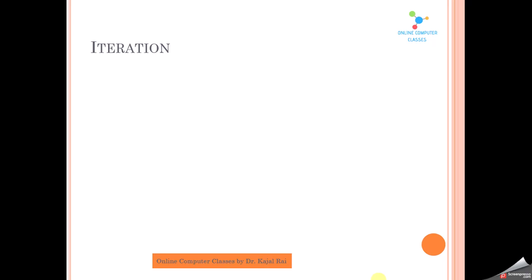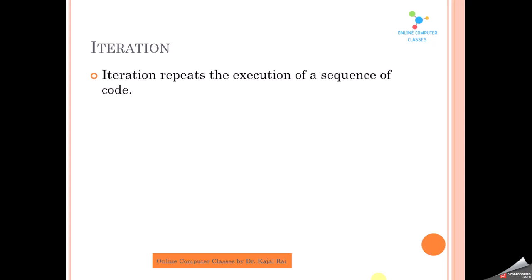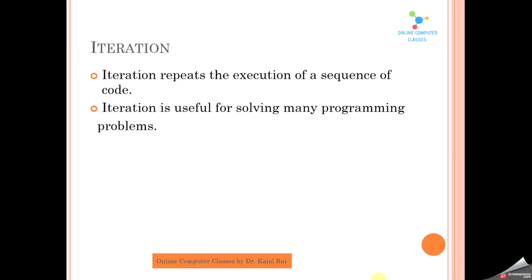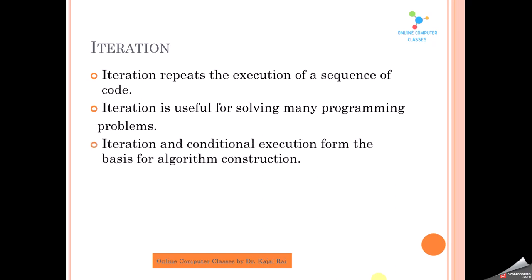First of all, we have to know what is iteration. Iteration is the repetition of statements — it repeats the execution of statements in a code. For example, suppose you have to repeat two or three statements again and again in your program; this is called iteration, where you use loops to repeat that sequence of instructions. It is very useful for solving many programming problems. Iteration and conditional execution form the basis for any algorithmic construction.